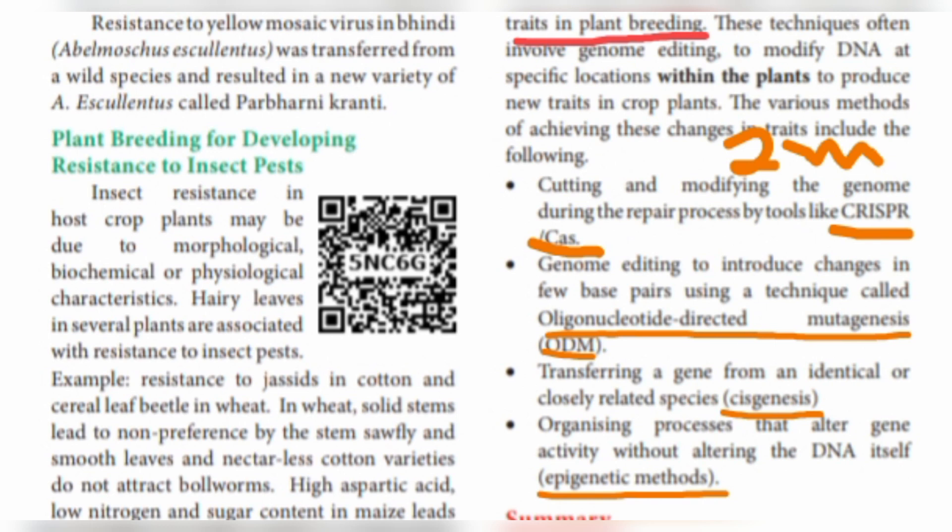CRISPR or CAS is how we modify the gene sequence. The next technique is ODM. ODM stands for Oligonucleotide Directed Mutagenesis.